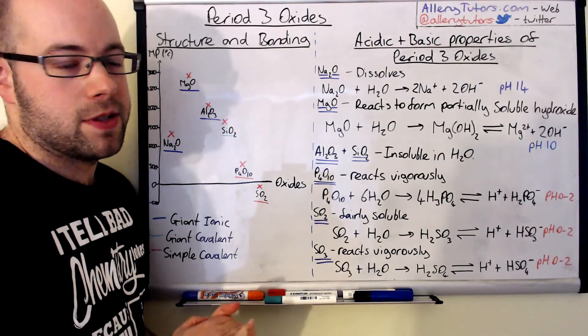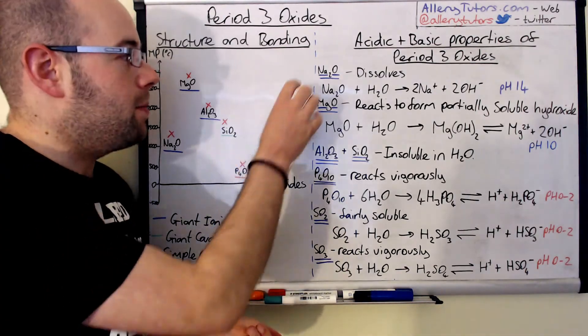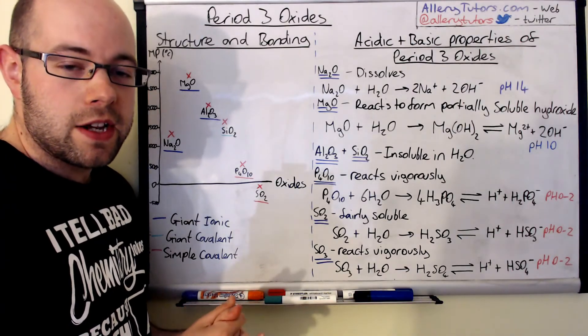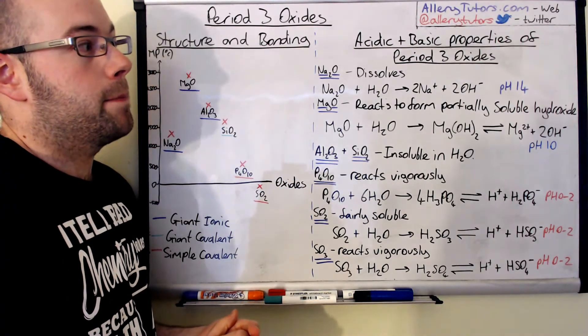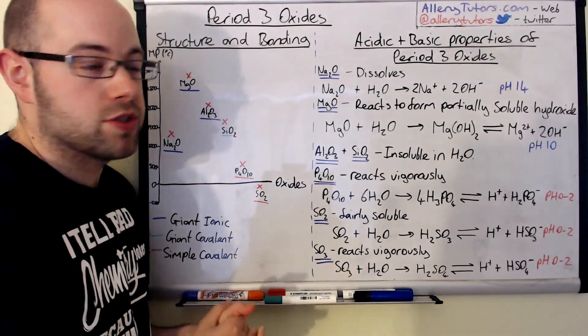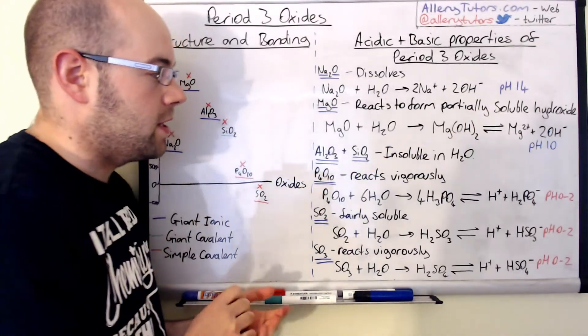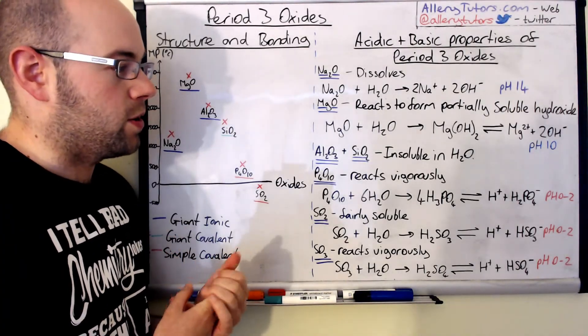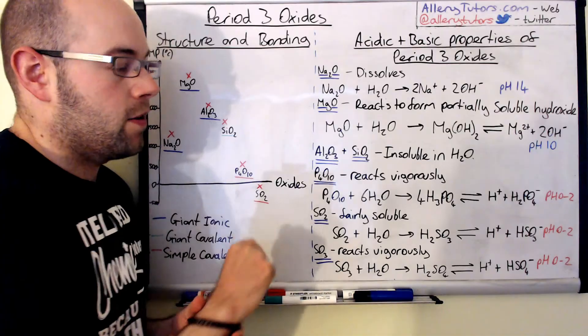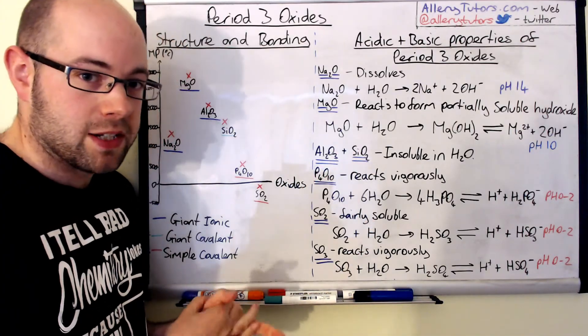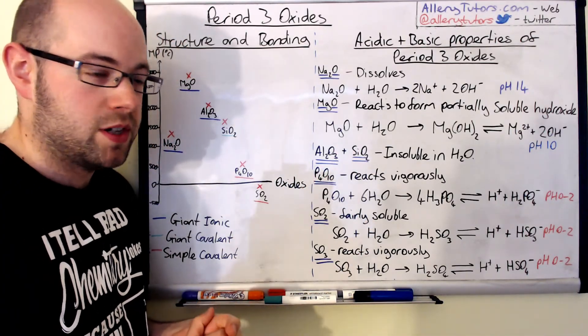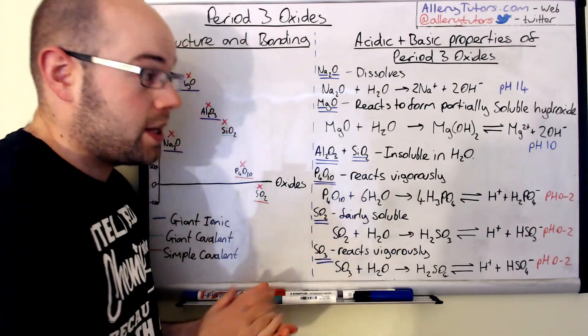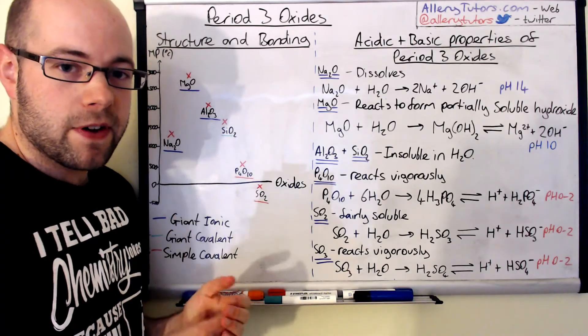Now you'll notice a slight trend going down this or going across the period. When we start with our ionic compounds, our ionic oxides, they generally form, well they do, they form alkaline solutions. So we see pH 14 and pH 10. In the middle, the giant covalent ionic with some giant covalent character in them are insoluble in water. But as we go on to the non-metal simple covalent molecules, these will form acidic hydroxides and that's the general trend.